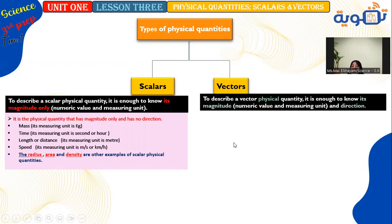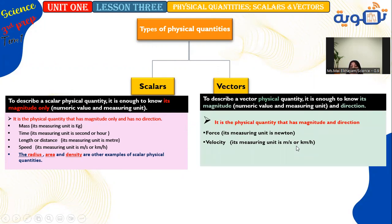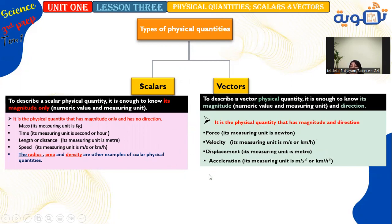A vector physical quantity requires both magnitude and direction to describe it. Examples include force (Newton) — 'push something in front of you' specifies a direction. Velocity has the same measuring unit as speed (m/s or km/h) — speed and velocity are two faces of the same coin, one scalar and one vector. Displacement (meters), acceleration (m/s² or km/h²) are also vectors, because they have positive or negative values.